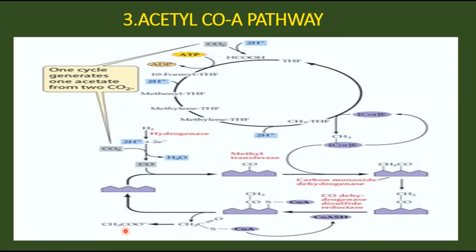The methyl group of acetate originates from the reduction of carbon dioxide by a series of reactions involving the coenzyme tetrahydrofolate, or THF. The methyl group is then transferred from tetrahydrofolate to an enzyme containing vitamin B12, where it acts as a cofactor. The methyl group (CH₃) then combines with carbon monoxide to form the final product, acetyl-CoA.